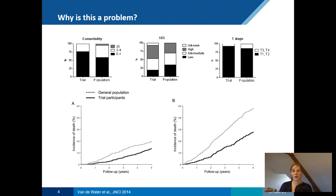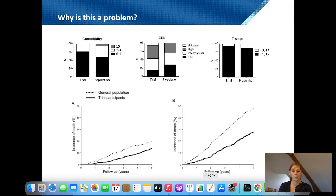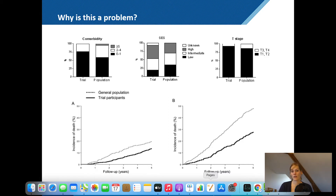Importantly, this study included only patients from the cancer registry who fulfilled the eligibility criteria — so already a selection of the real population. Despite applying the same eligibility criteria, patients in the real population still had more comorbidities, poorer socioeconomic status, and worse tumor characteristics such as T-stage (tumor size). As a result, outcomes of older patients in the trial were better compared to those in the real population, showing that trial results cannot simply be extrapolated to real-world patients.